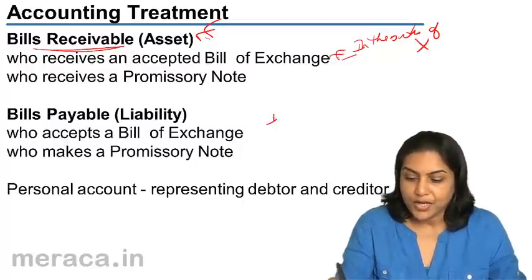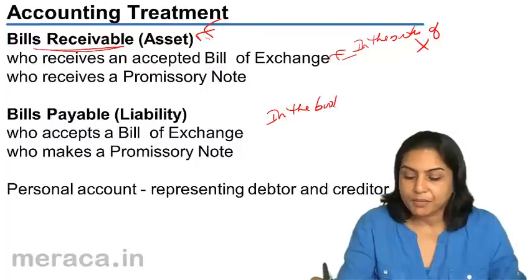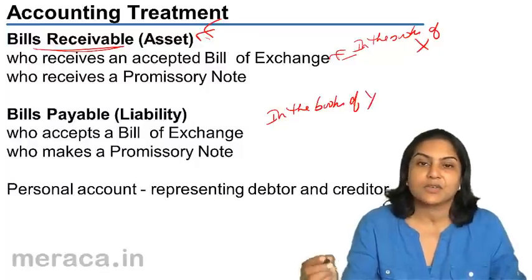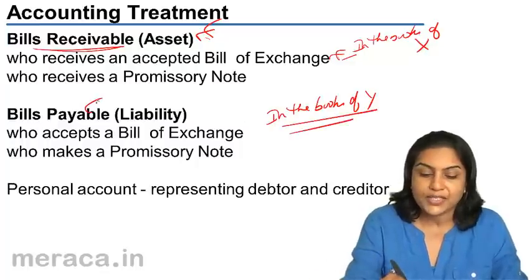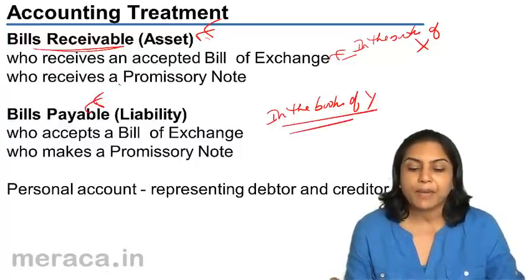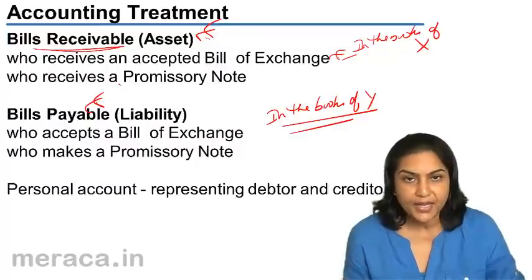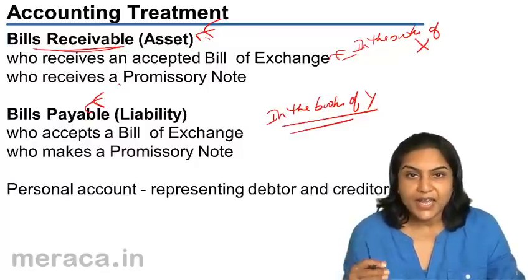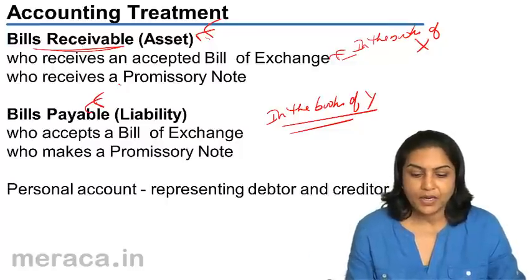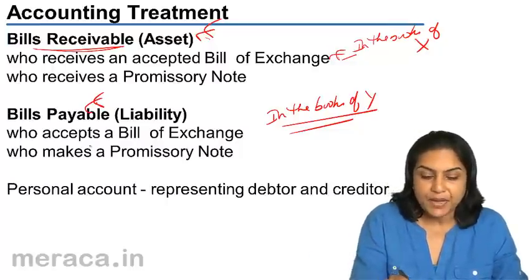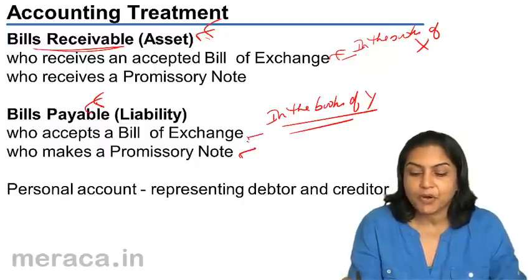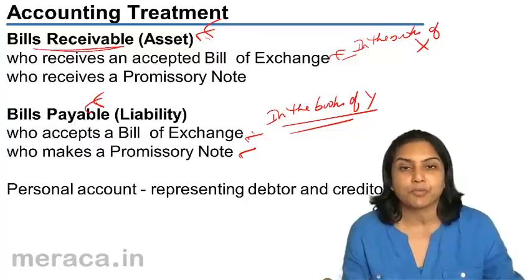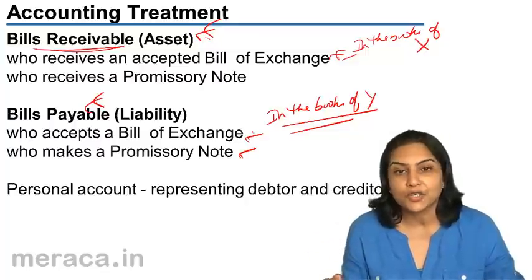So in the books of Y, in our example, the same documents — whether it was a bill of exchange or a promissory note — would be known as a bill payable. Bill payable is a liability; it is when money has to be paid. Therefore, it is a bill payable in the books of the person who accepts the bill of exchange or who prepares the promissory note promising to make payment.